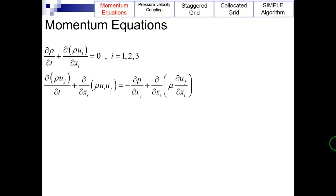Before I present the SIMPLE algorithm, let's have a look at the continuity and momentum equations in their differential form. As can be seen, there are four equations and five unknowns: three velocity components, one pressure, and one density — u, v, w, p, and rho. The fifth equation is the equation of state. Therefore, density is obtained by the continuity, velocity by the momentum equations, and pressure by the equation of state.